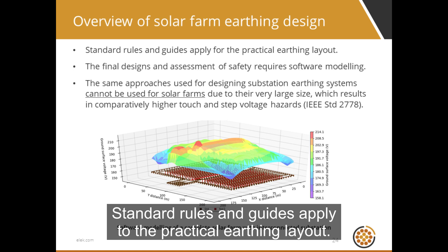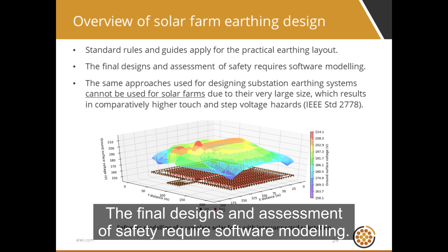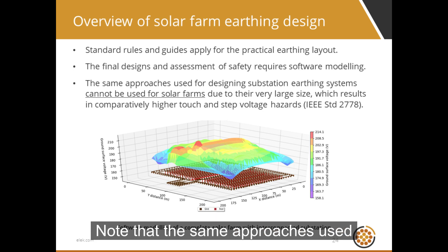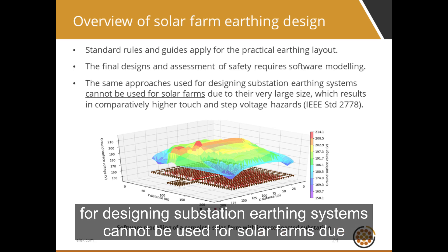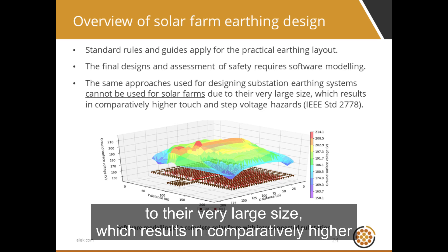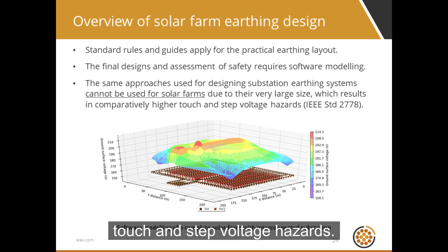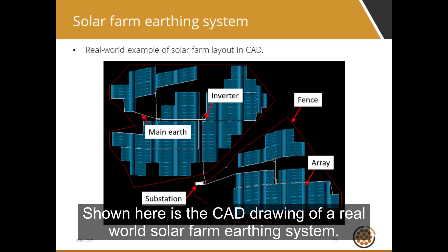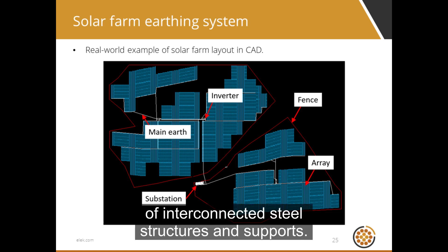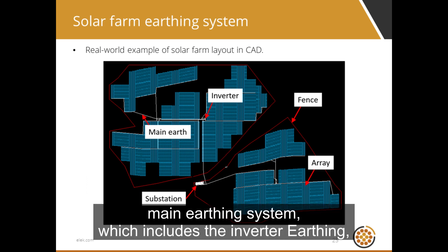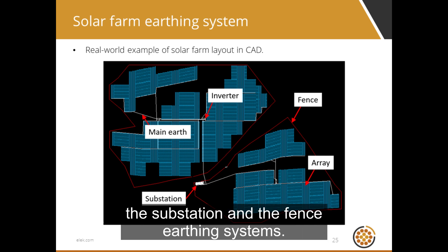Standard rules and guides apply to the practical earthing layout, and the final designs and assessment of safety require software modeling. Note that the same approaches used for designing substation earthing systems cannot be used for solar farms due to their very large size, which results in comparatively higher touch and step voltage hazards. Shown here is the CAD drawing of a real-world solar farm earthing system. The array earthing consists of interconnected steel structures and supports, bonded with the main earthing system, which includes the inverter earthing, the substation, and the fence earthing systems.